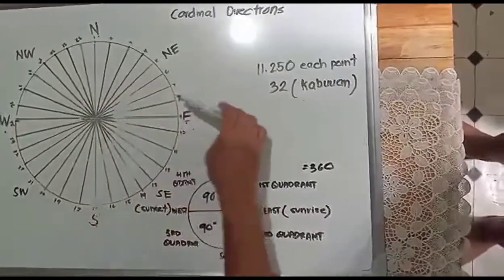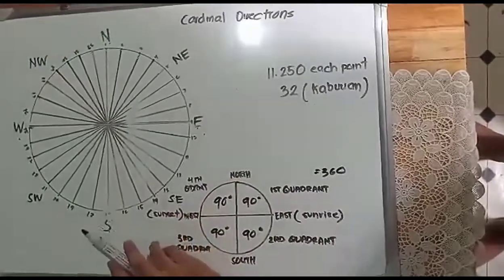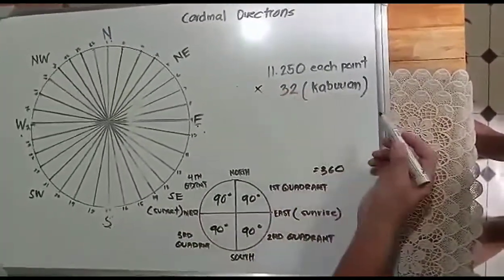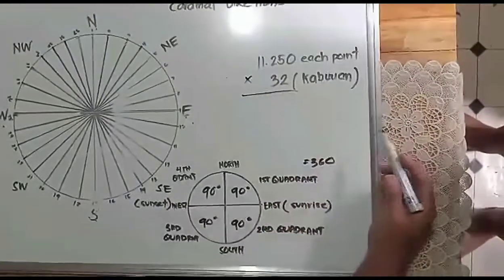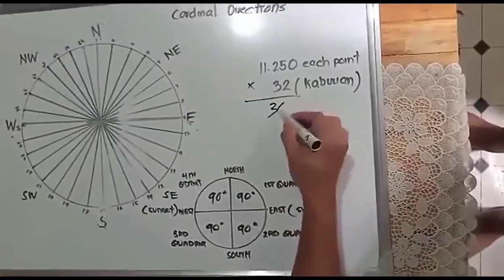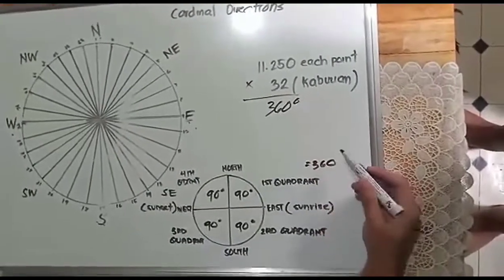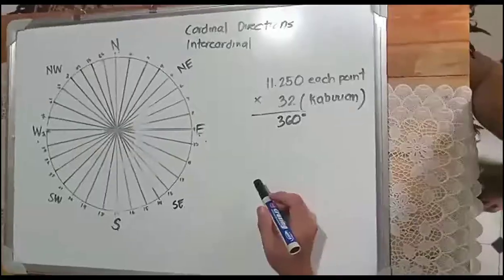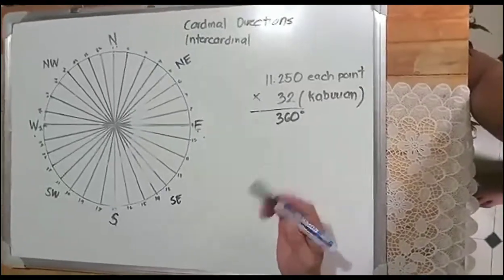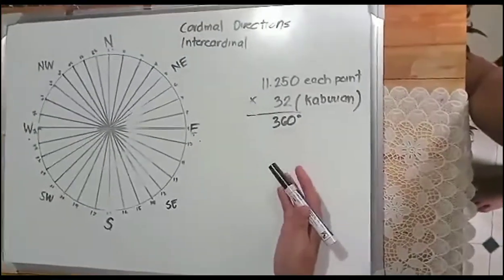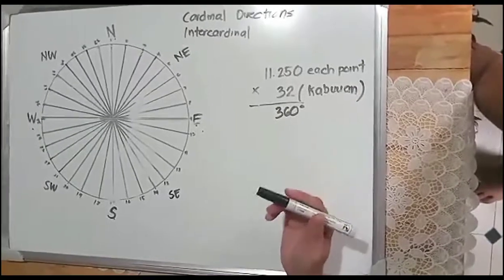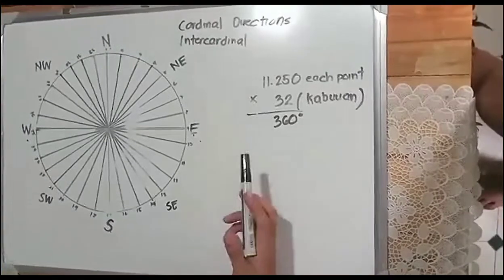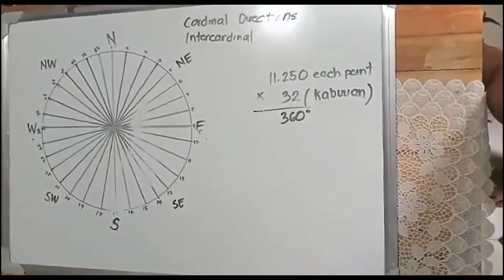Each point that we see here in the compass rose consists of 11.250 degrees each point. The total is 32 points. If we multiply 11.250 by 32 points, the result is 360 degrees. It is secondarily divided by 4 ordinal directions.